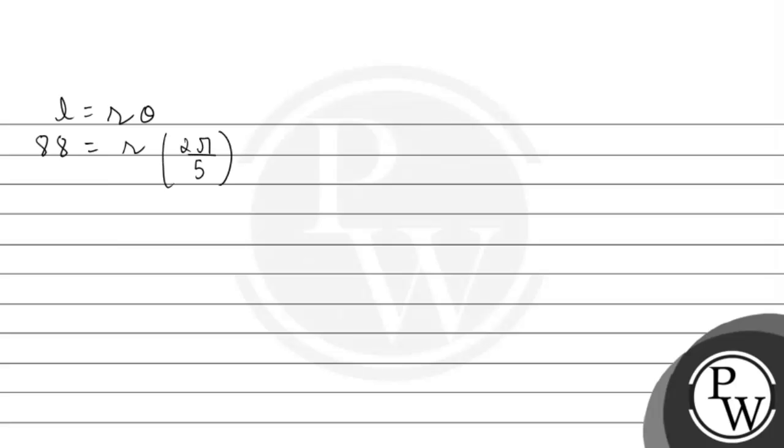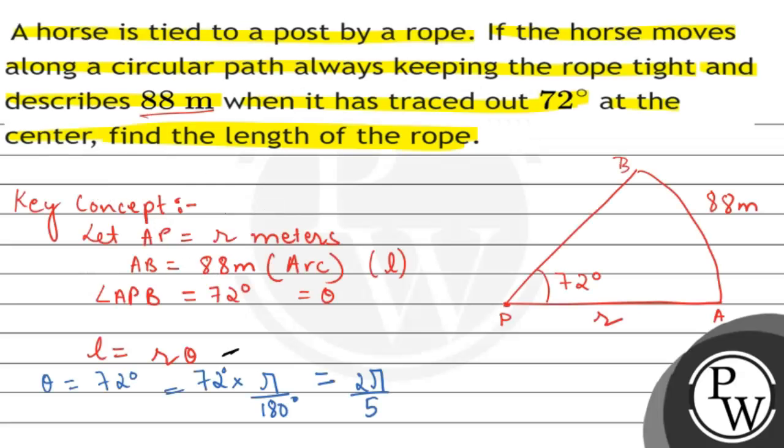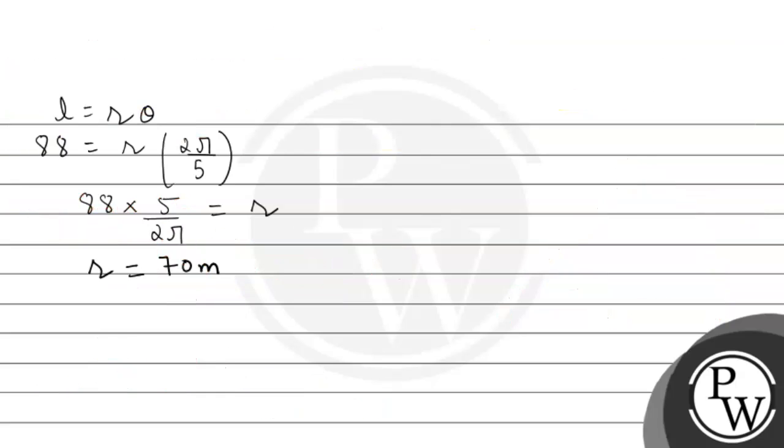Now we will solve this. 88 multiplied by 5 divided by 2 pi equals r. After solving this, we get r equals 70 meters. So we found the length of the rope. Therefore, the length of the rope is 70 meters.